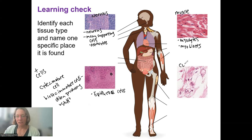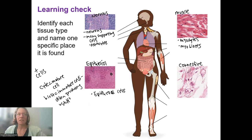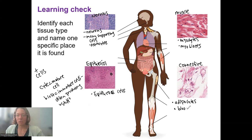Then we've got connective tissue, found in lots of places in the body — around organs, in the blood, between organs, between joints. So many types of connective tissues. It's the most diverse, so it also has the most diverse types of cells. Some of the cell types are adipocytes — fat cells — and blood cells. Both the red blood cells and white blood cells are a type of connective tissue.